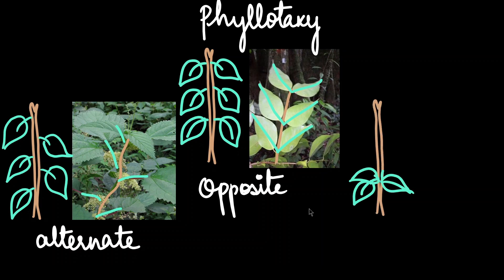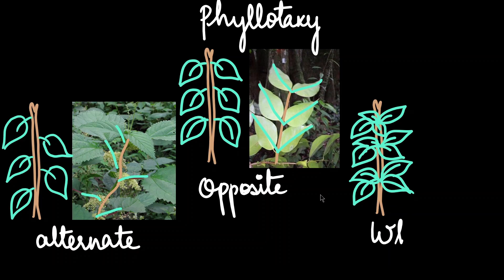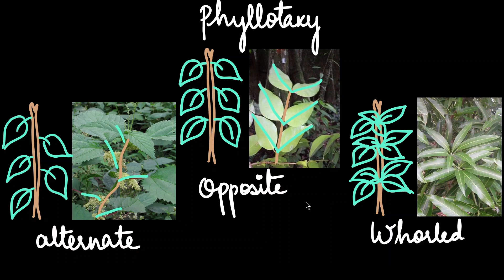The final variety is called whorled phyllotaxy. Whorled phyllotaxy is when two or more leaves arise at a single node. For example, in these mango leaves, you can see a common branch and multiple leaves coming at the same node. So this is the third variety of phyllotaxy.